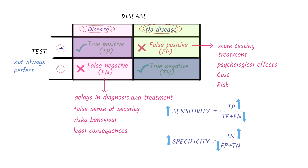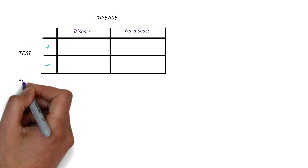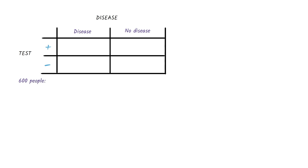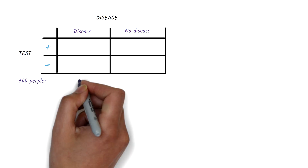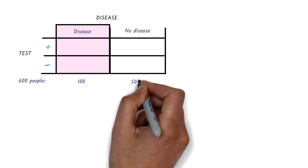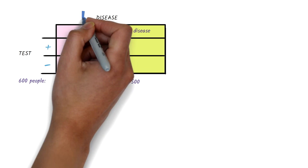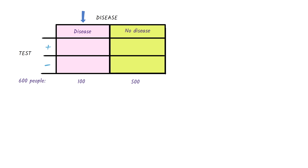Let's work through an example. Let's say we have a group of 600 people. We'll assume that 100 people have a disease and 500 people do not. First, we'll focus on the 100 people who have the disease.